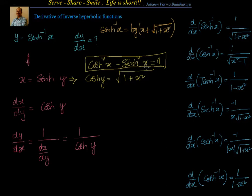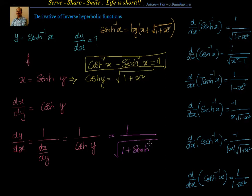With respect to hyperbolic functions, cosh²(x) minus sinh²(x) equals 1. Therefore, 1 by cosh(y) becomes 1 by square root of 1 plus sinh²(y). Since sinh(y) is x, I can write it as 1 by square root of 1 plus x square. So the derivative of sinh⁻¹(x) is equal to 1 by square root of 1 plus x square.